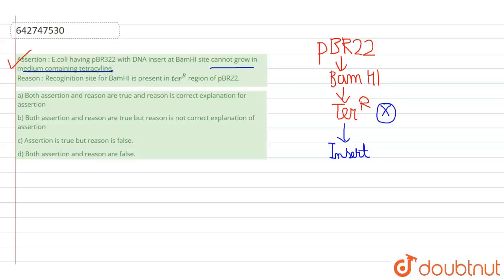As a result, the E. coli cannot grow in a medium containing tetracycline because it is no more resistant to it. The reason states that the recognition site for BamH1 is present in the tetracycline resistance region in pBR322, which is absolutely correct.